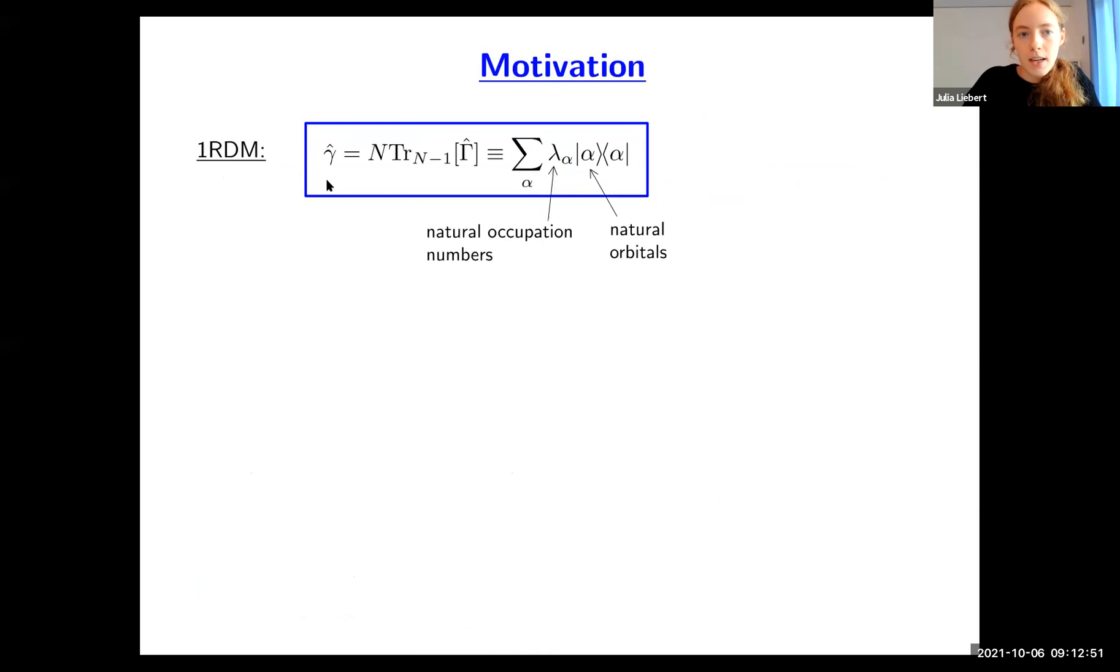Let me start with a short motivation and make sure we use the same notation. We have the one-RDM as our main level in RDMFT, defined by tracing out n minus one particles of the m particle density operator denoted by capital gamma. We normalize it to total particle number, so all eigenvalues sum to n. We identify them as the natural occupation numbers lambda_i for the corresponding natural orbitals.